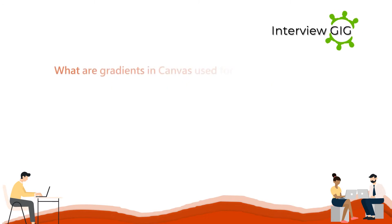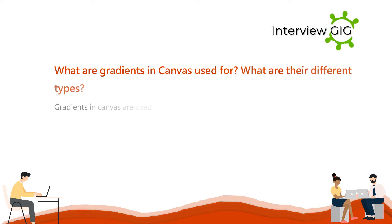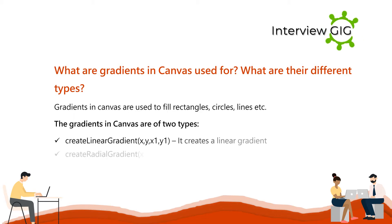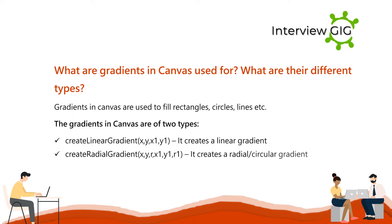What are gradients in canvas used for? What are their different types? Gradients in canvas are used to fill rectangles, circles, lines, etc. The gradients in canvas are of two types: createLinearGradient(x, y, x1, y1), which creates a linear gradient; and createRadialGradient(x, y, r, x1, y1, r1), which creates a radial or circular gradient.